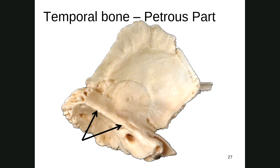On the inside of the temporal bone, this whole region is the petrous portion — the petrous part of the temporal bone. In this superior view looking down into the cranium, you can see the petrous parts on both sides.